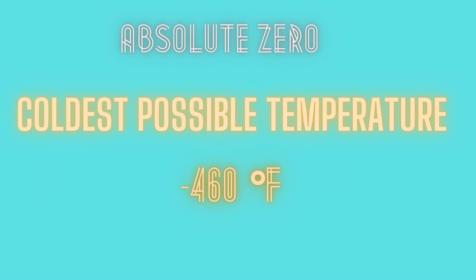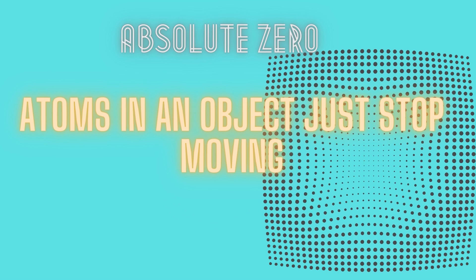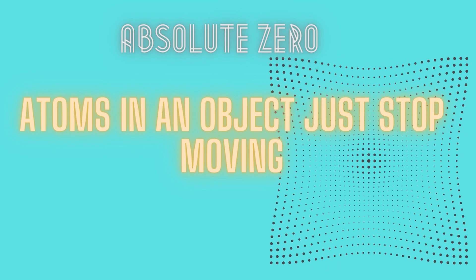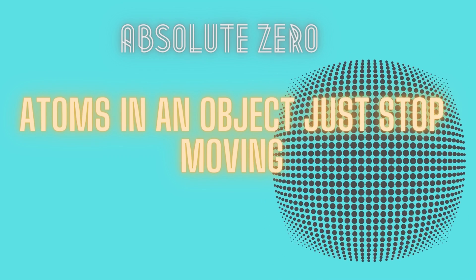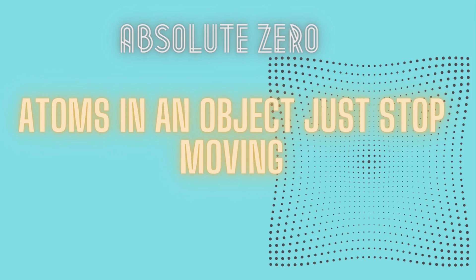Absolute zero is the coldest possible temperature — a temperature at which atoms in any object just completely stop moving. These computers are just like Giannis. They really got ice in their veins.